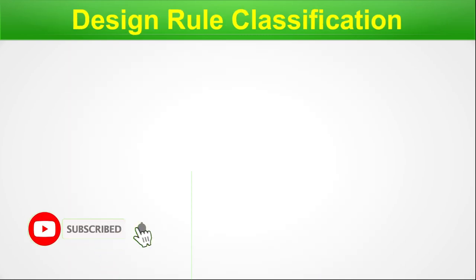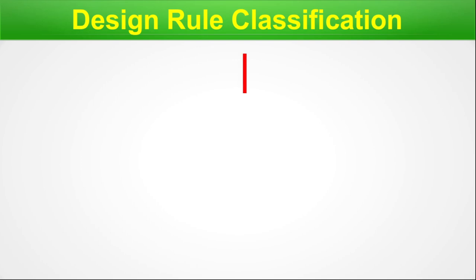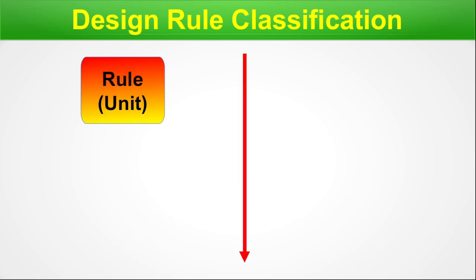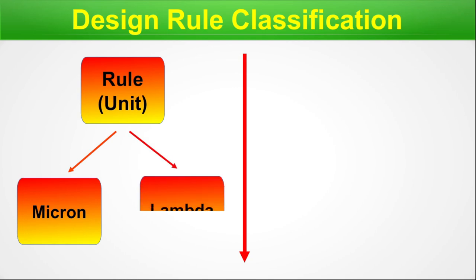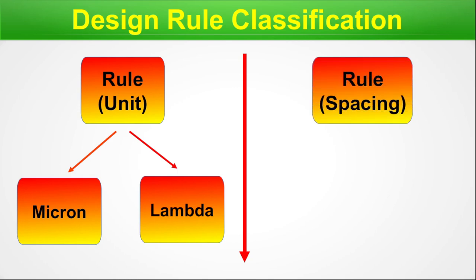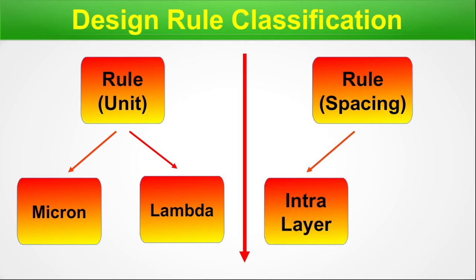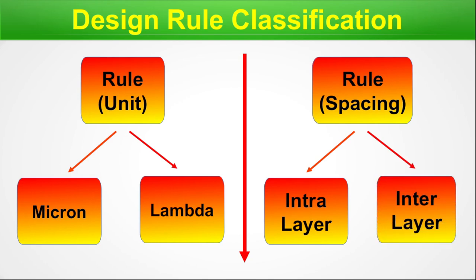Design rule classification: if we segregate design rules with respect to unit, we find the micron rule and the lambda rule. If we segregate with respect to spacing, we find intralayer rules — rules for segments of the same layer — and interlayer rules — rules between two different types of layers regarding their spacing.